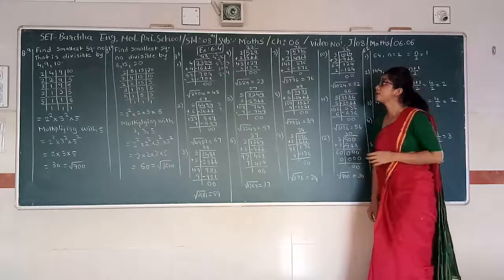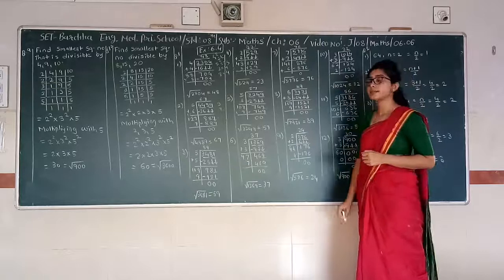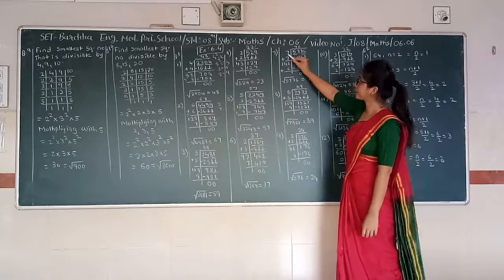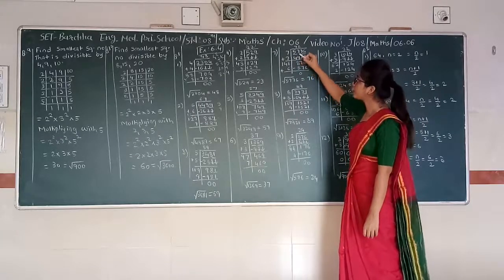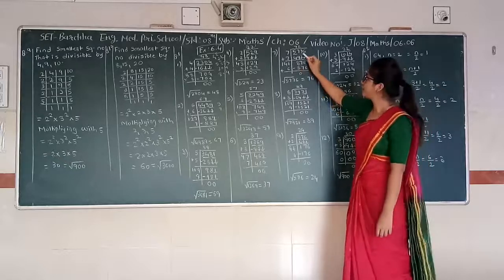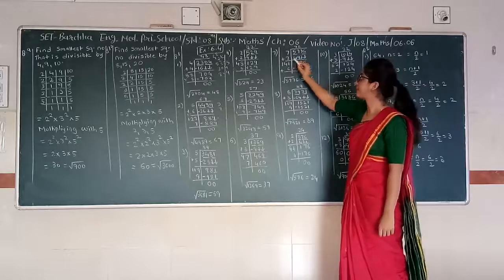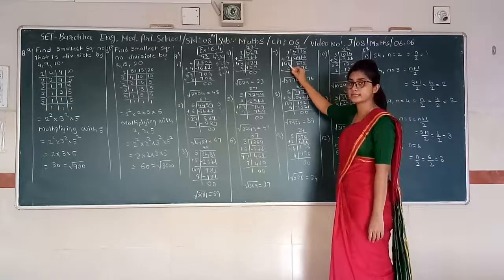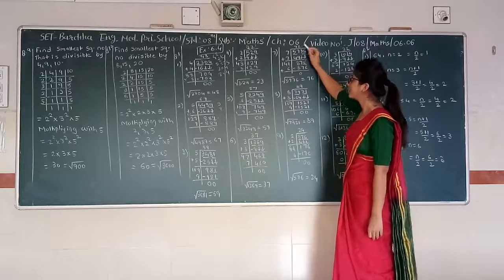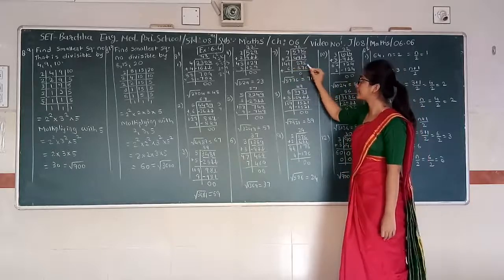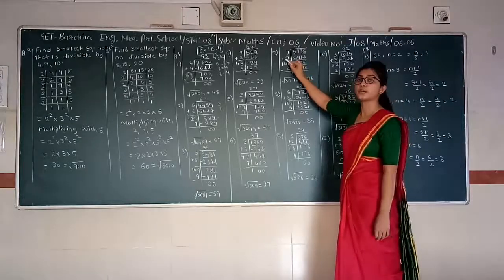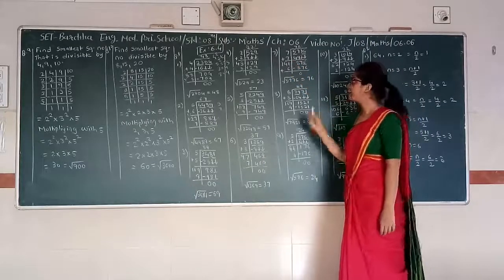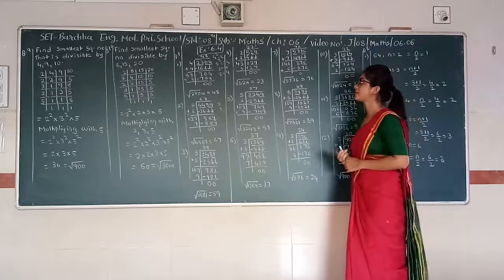Next: 5776. We divide into pairs: 57 and 76. 57 has nearest perfect square 49, which is 7 squared. We write 7. 7 times 7 is 49. Subtracting 49 from 57 gives remainder 8. Taking 76 downward, we have 876. We write 7 over here. Unit digit is 6; numbers whose squares end in 6 are 4 and 6. We take 6. 146 times 6: 6 sixes are 36, write 6 carry 3; 4 sixes are 24 plus 3 gives 27, write 7 carry 2; 1 times 6 plus 2 gives 8. 876 minus 876 gives 0. Hence, square root of 5776 is 76.